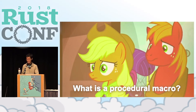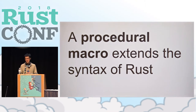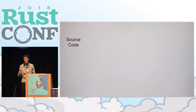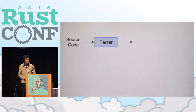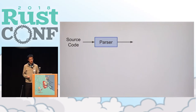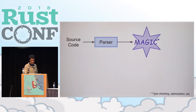So first off, what is a procedural macro exactly? In a single sentence: a procedural macro extends the syntax of Rust. When you tell the Rust compiler or cargo to compile your code, you start with source code, which goes into the parser. The parser converts it into a form that's easier for the rest of the compiler to understand, and after all that we get the finished binary — either an executable or a library crate.